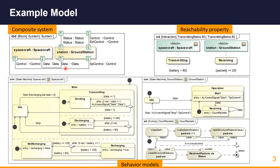Let's have a look at an example model. In this example, we see a simplified system of a spacecraft and a ground station. The spacecraft is sending packets to the ground station and its battery is also depleting after a certain amount of time. If the battery is below 80, then it starts recharging until it is fully recharged. After the spacecraft starts operating, it sends data packets to the ground station. The ground station receives these packets, counts how many it has received, and forwards them to the environment.